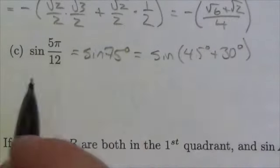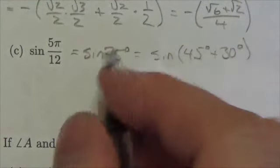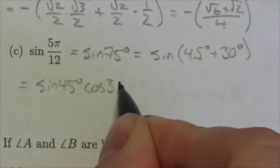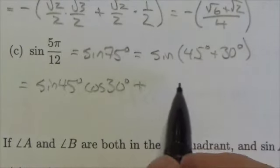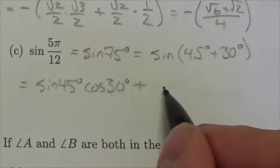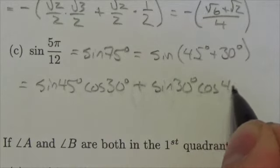Now, I go back to my sine identity for the sum of two angles. And I get that this is going to equal the sine of 45 degrees, cosine of 30, plus, because the sine function here maintains that operation, the sine of 30 degrees times the cosine of 45 degrees.